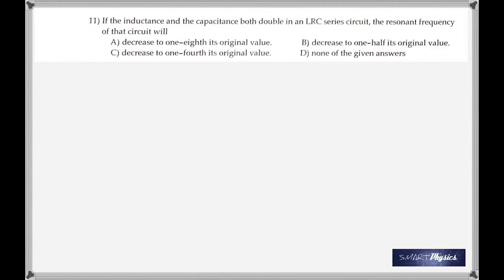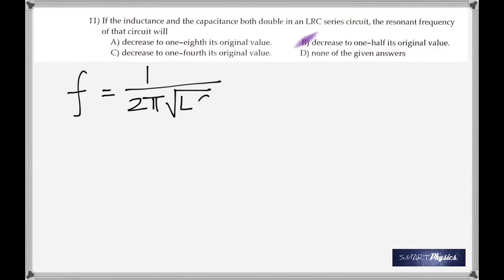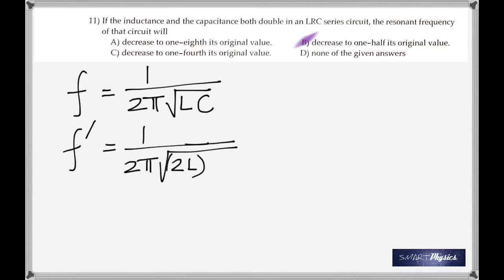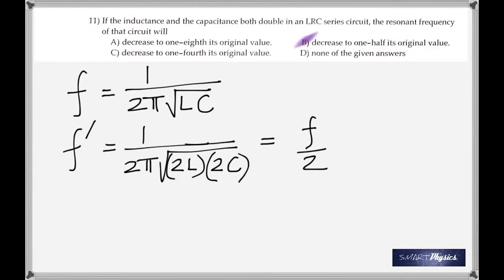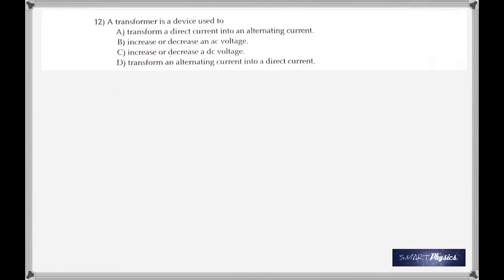If the inductance and capacitance both double in an LRC series circuit, what happens to the resonant frequency? The resonant frequency is given by 1 divided by 2π times the square root of LC. If both L and C are doubled, you get F' equal to 1 over 2π times the square root of 2L times 2C, which gives a factor of 4 inside the root, so square root of 4 equals 2 outside. Therefore F' equals F divided by 2 — it decreases to one half of its original value.